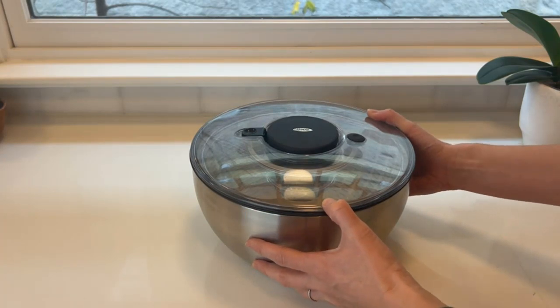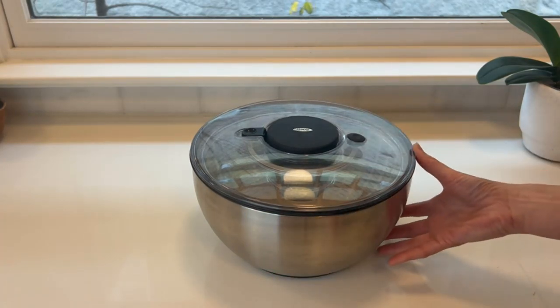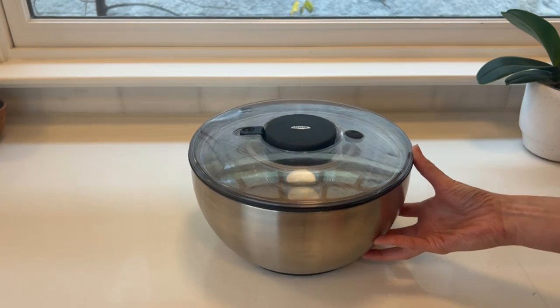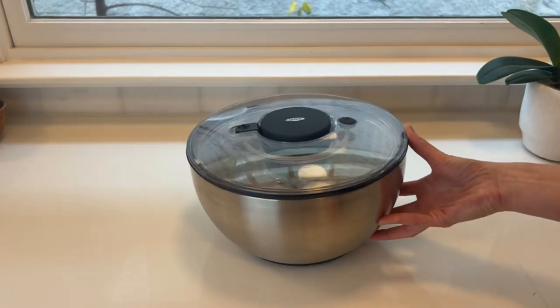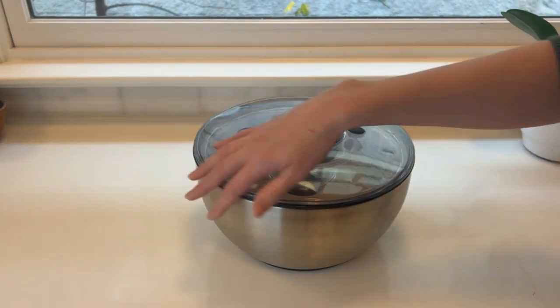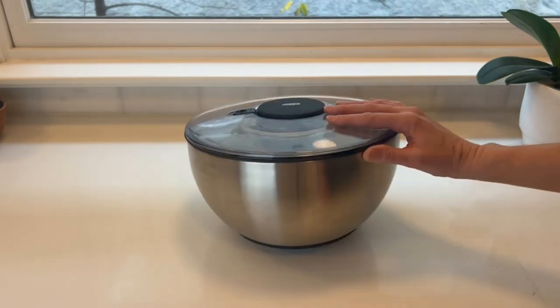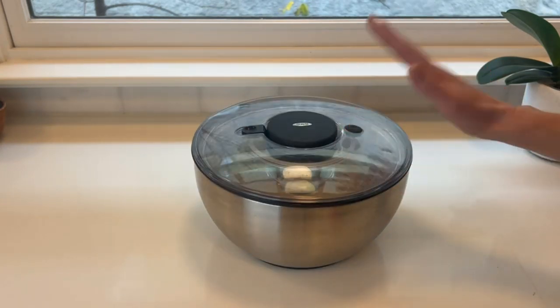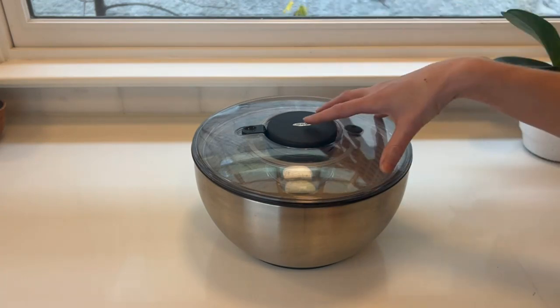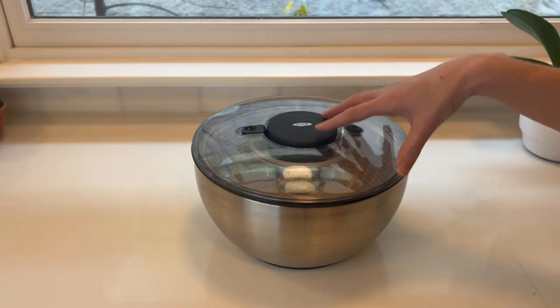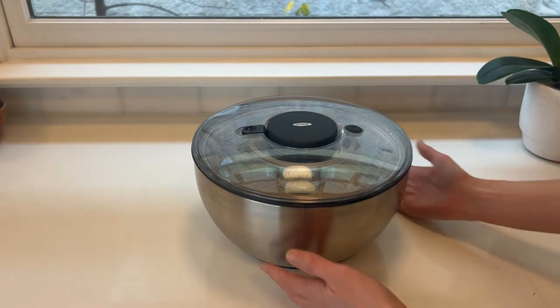Number three: OXO Good Grips Little Salad and Herb Spinner. Sometimes you only need a petite spinner that stores compactly but has the oomph of larger models. The OXO Good Grips Little Salad and Herb Spinner is just right for small portions of lettuce, berries, and especially bunches of fresh herbs.